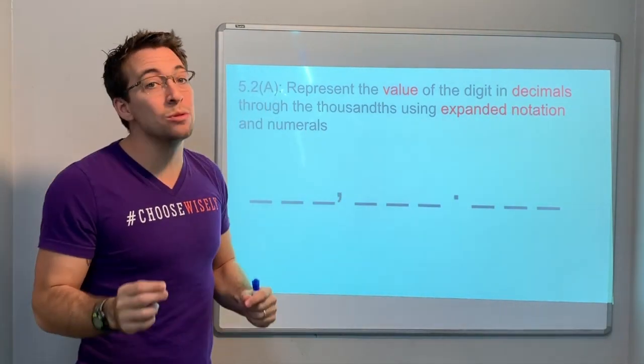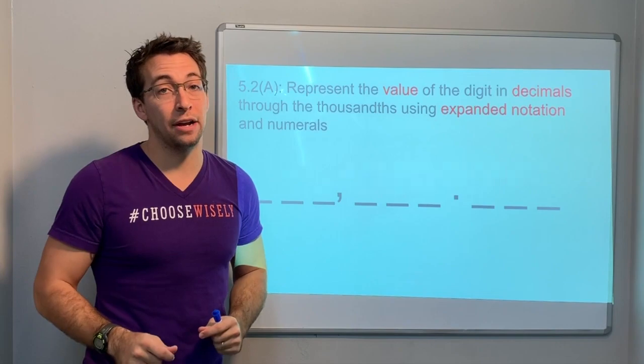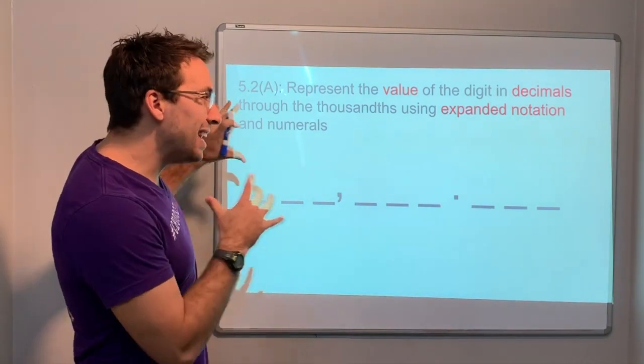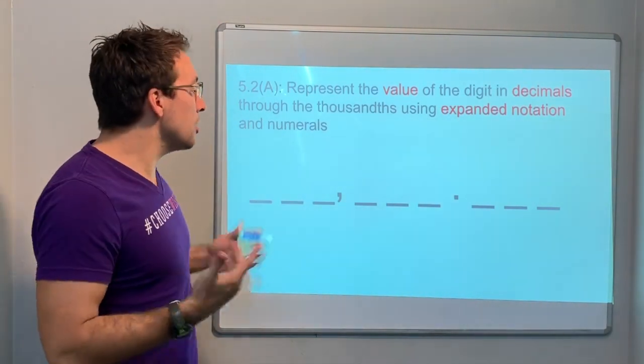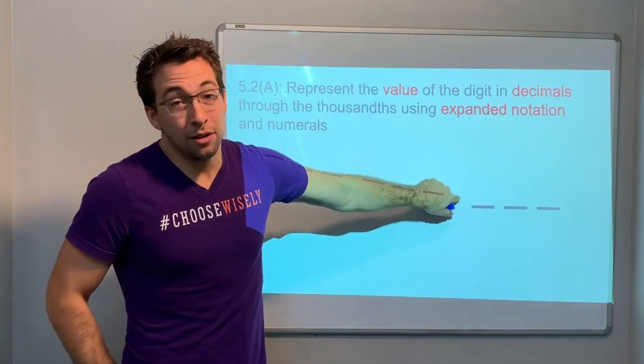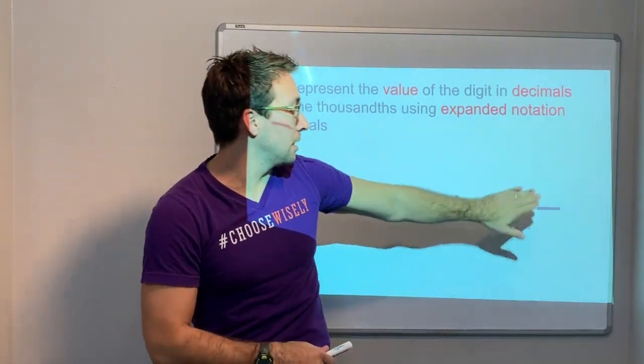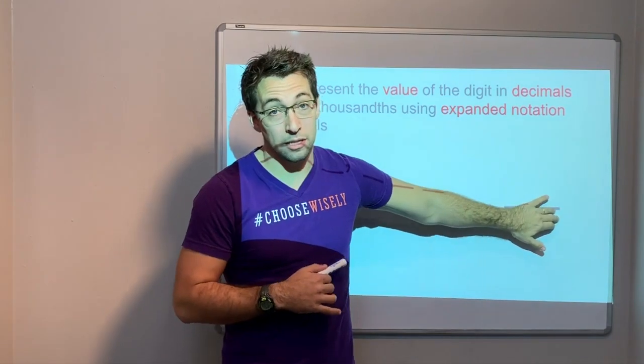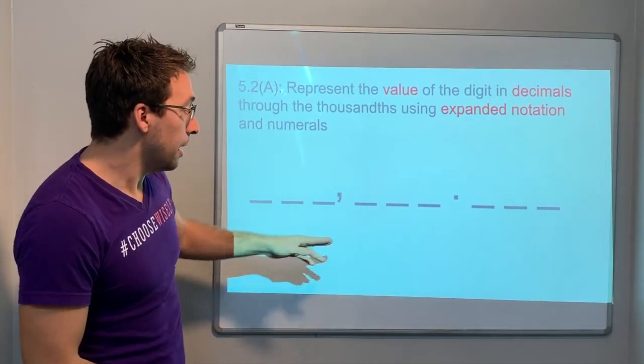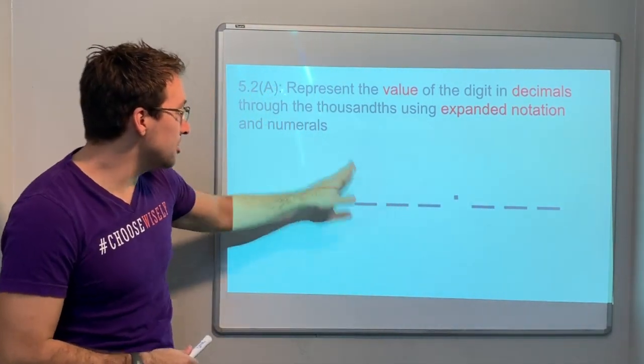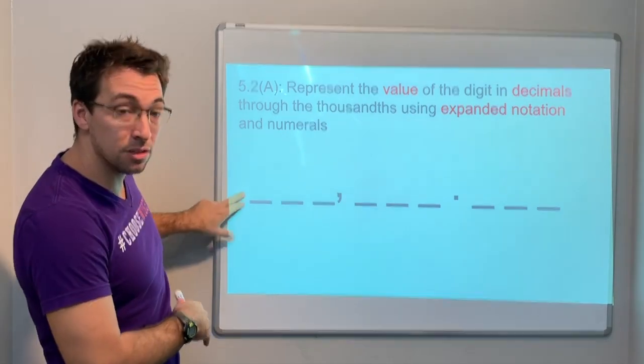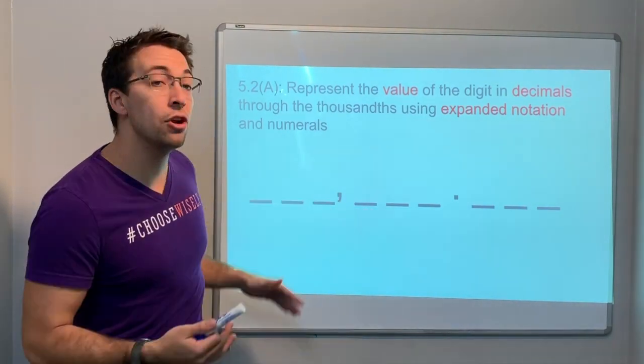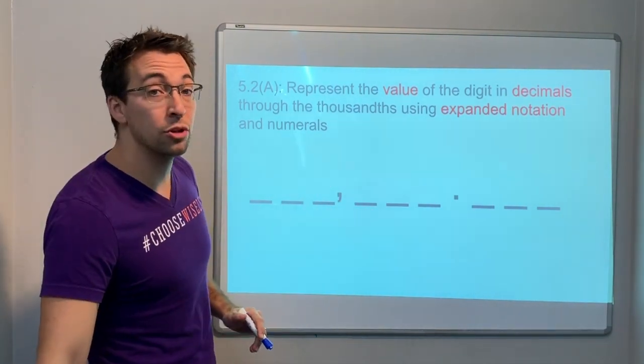What does that mean? It means you need to know that here's the decimal, and then the tenths place, hundredths place, thousandths. Ones, tens, hundreds, thousands, ten thousands, hundred thousands. You have to know the place value and how to use it in word form.